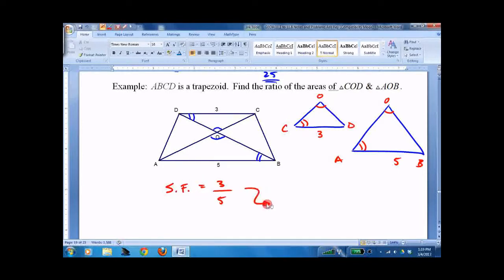So we know the scale factor small to big is 3 to 5. Therefore, the area ratio is 9 to 25. That's it.